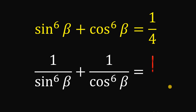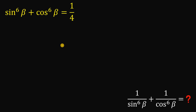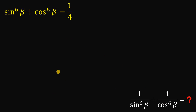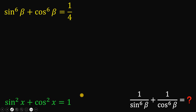Now pause this video right now and see if you can answer this question. I will show you the solution in 3, 2, 1. So given this equation, the goal is to evaluate 1 over sine raised to the power of 6 of beta plus 1 over cosine raised to the power of 6 of beta. Solving this kind of trigonometric puzzle, we will use the Pythagorean identity: sine squared x plus cosine squared x equals 1.